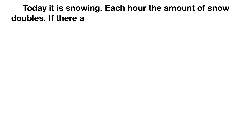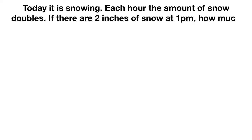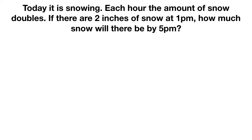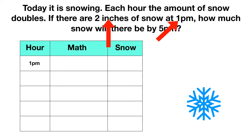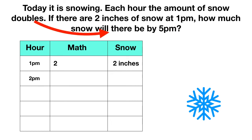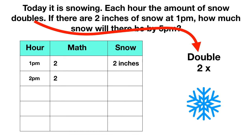Now it's time for you to try on your own. Today it is snowing. Each hour, the amount of snow doubles. If there are two inches of snow at 1 p.m., how much snow will there be by 5 p.m.? At 1 p.m., the problem tells us there are two inches of snow. At 2 p.m., the amount doubles — two times as much — so two inches multiplied by two gives four inches.